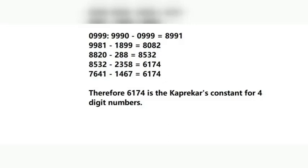We obtained 0999. This can be written in descending order as 9990 and ascending order as 0999. The difference between 9990 and 0999 is 8991. Again, repeat the process. 8991 can be written in descending order as 9981 and ascending order as 1899. The difference between 9981 and 1899 is 8082.